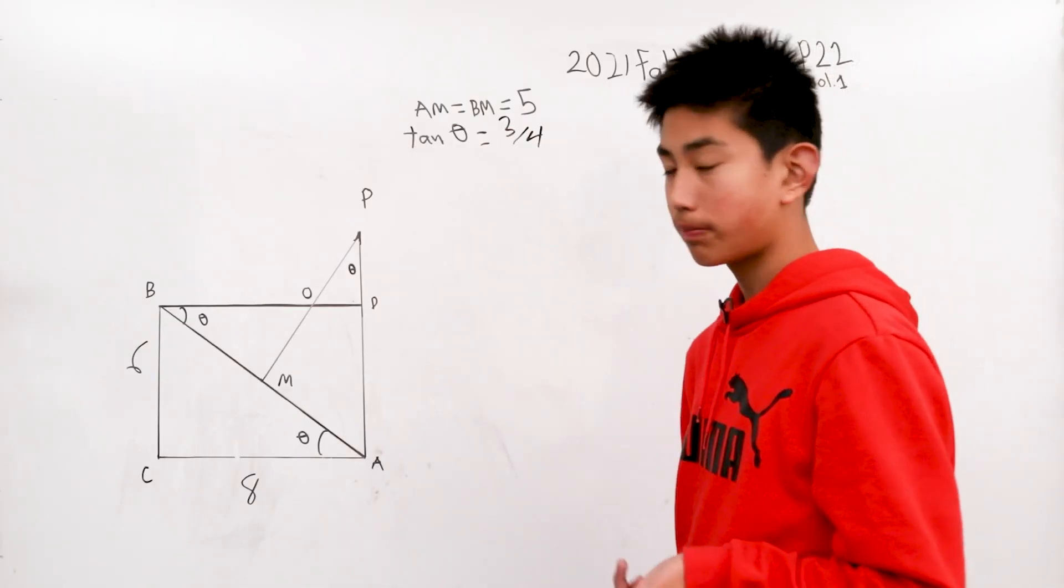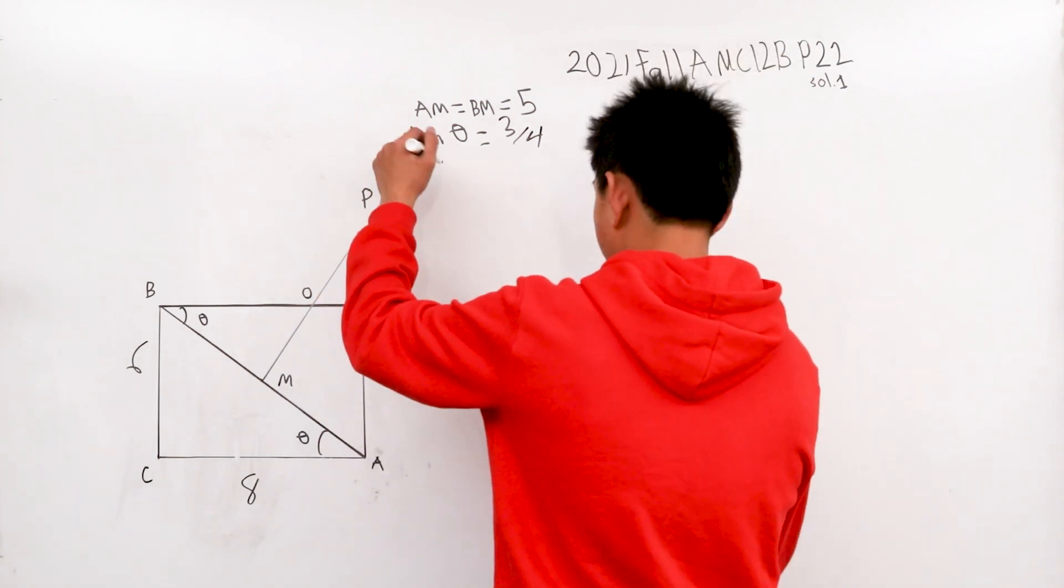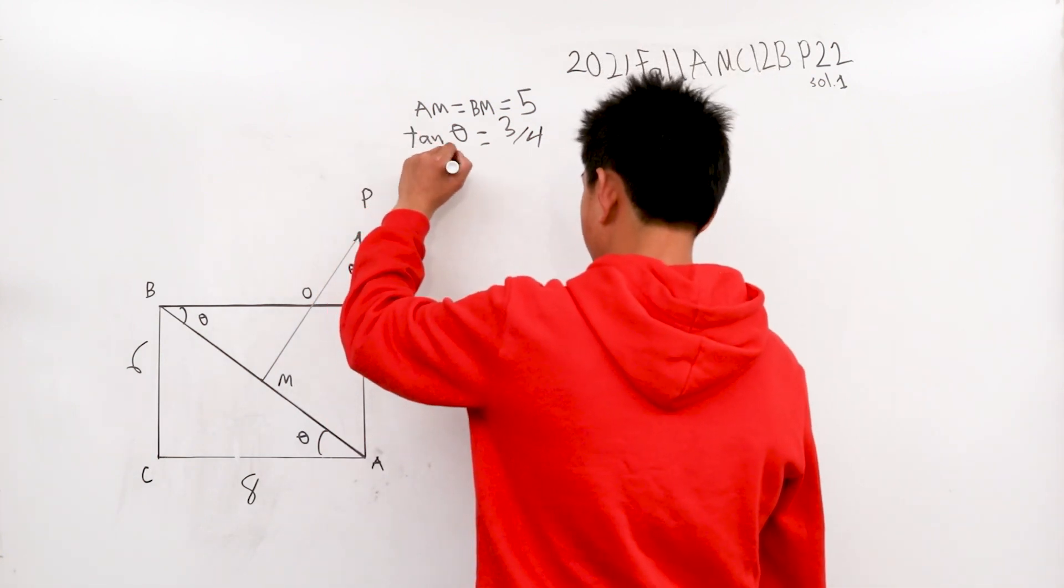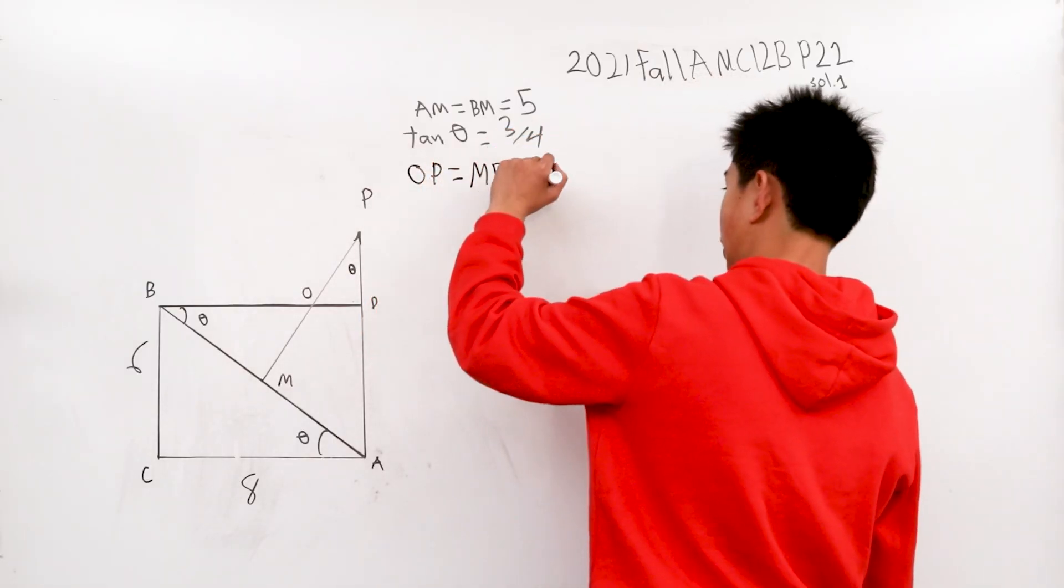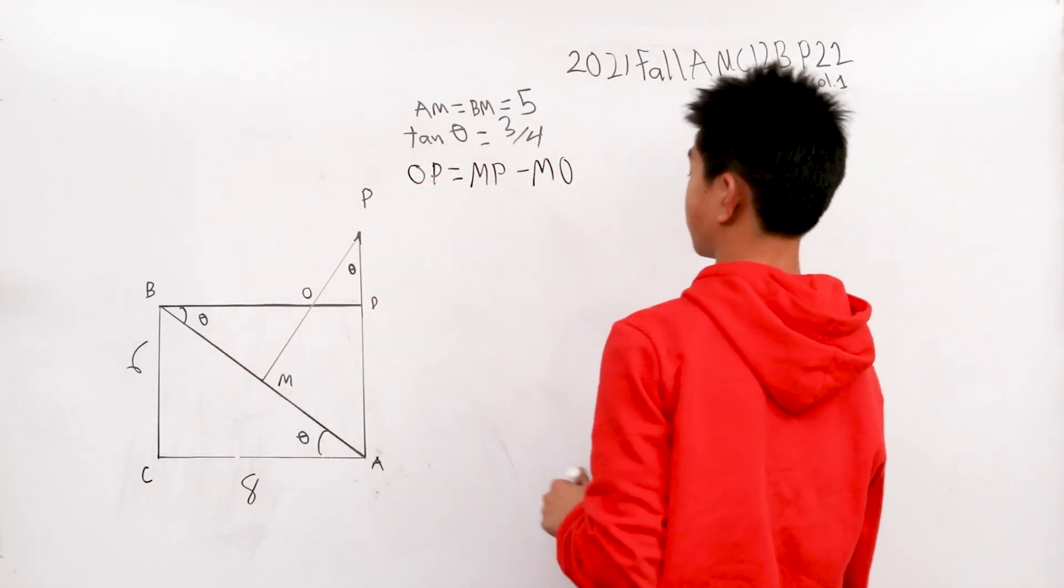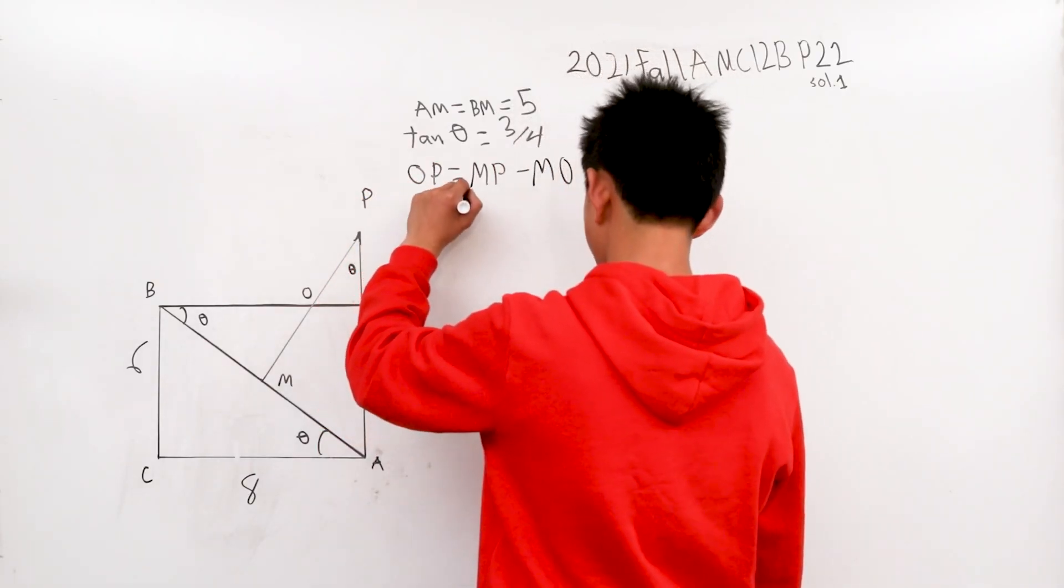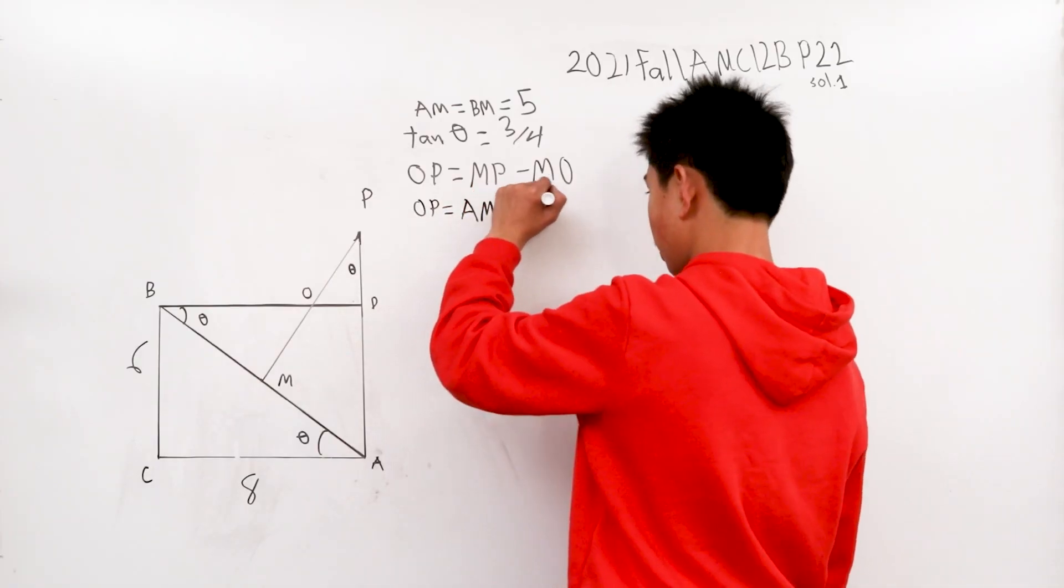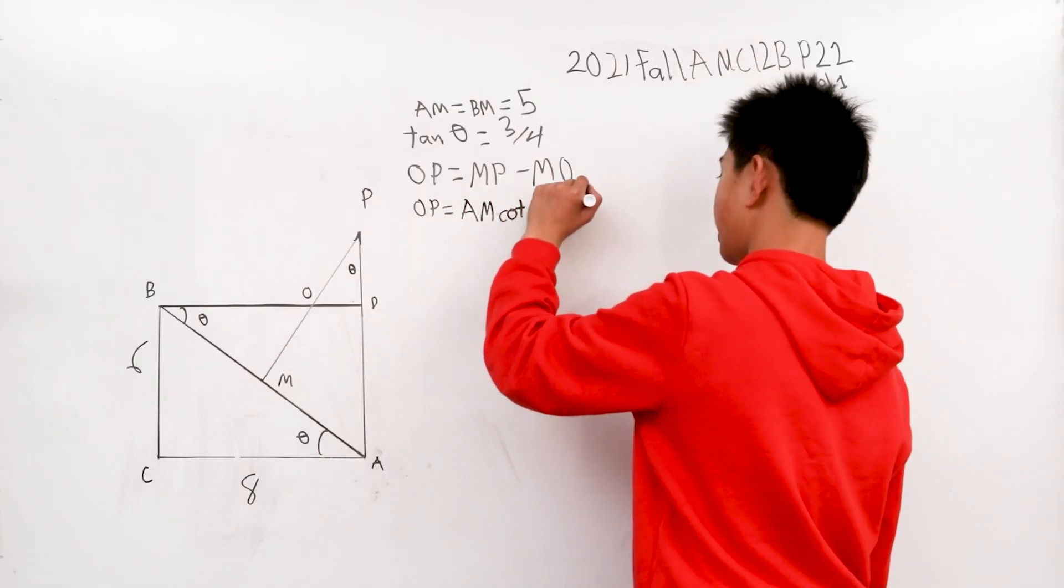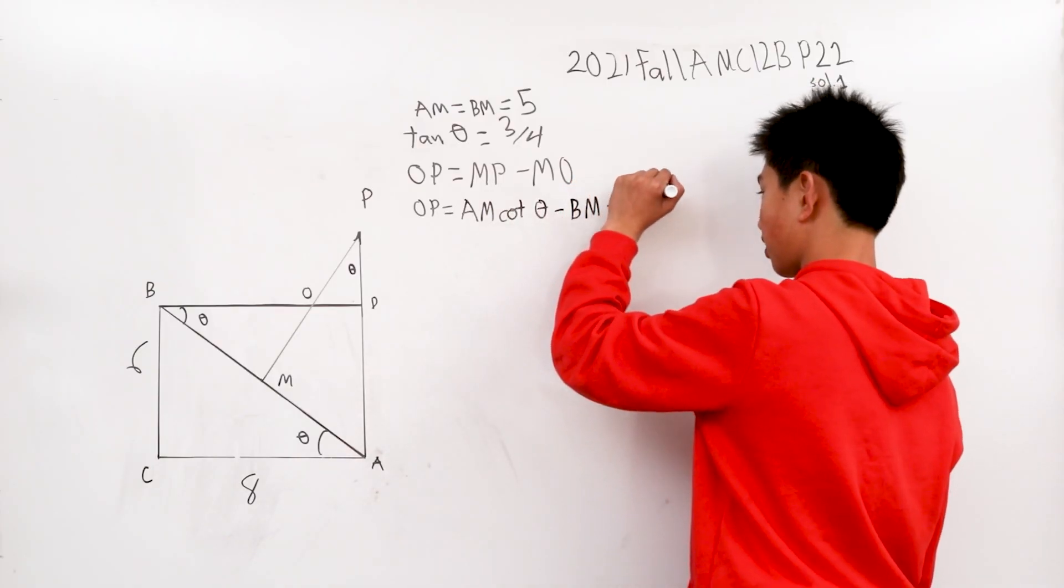We want to find this length OP. OP is MP minus MO in terms of length. OP equals AM times the cotangent of theta minus BM times the tangent of theta.